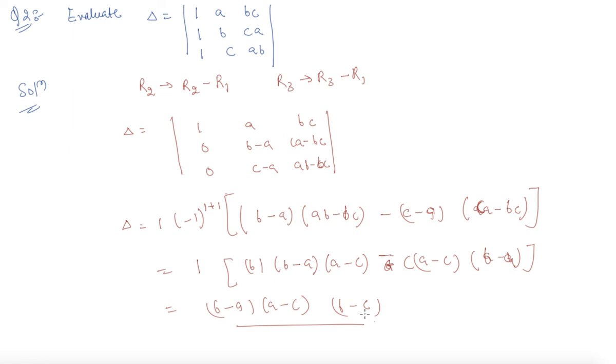Students, simply I have used here, I have subtracted one row from another row so that the determinant value doesn't change. So I hope students now you are pretty clear about the questions based on properties of the determinants. If you are still facing any doubt or any question, please do let me know in the comment section. Thank you, happy learning.